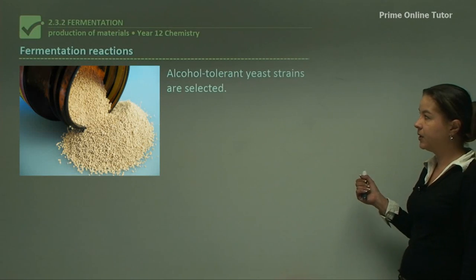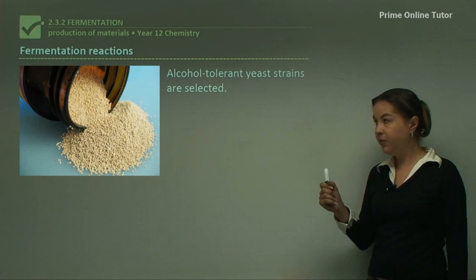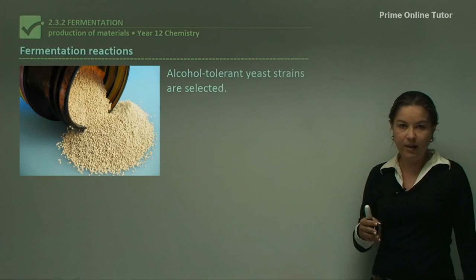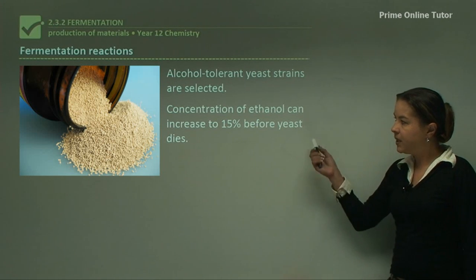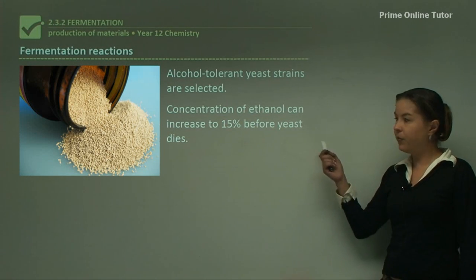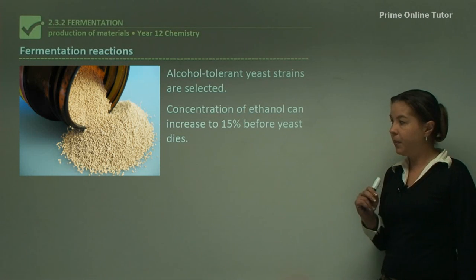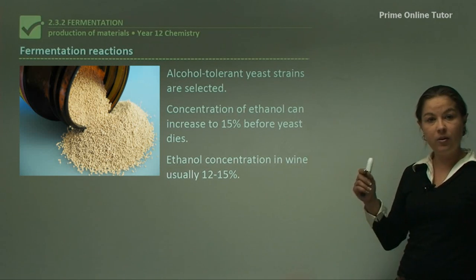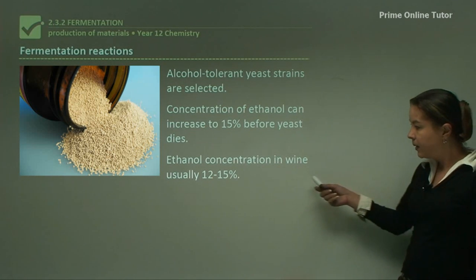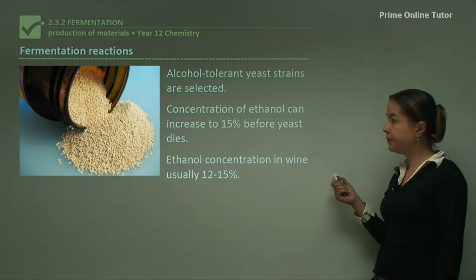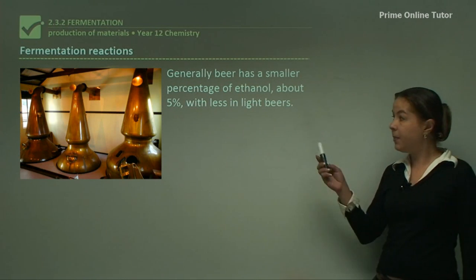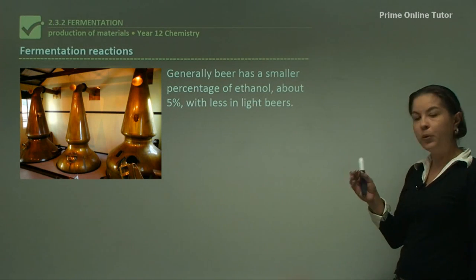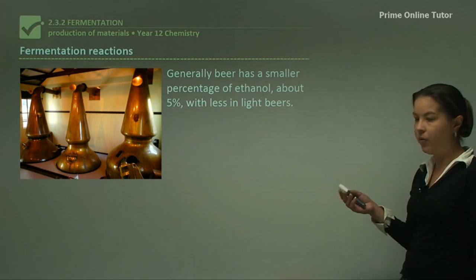Fermentation reactions use alcohol-tolerant yeast, because if you use a yeast that wasn't tolerant to alcohol, once the alcohol starts being produced, it will die and the reaction will stop. The concentration of ethanol can increase to about 15% before the yeast starts dying. In wine, ethanol content is about 12 to 15%, and beer generally has about 5%, with less in light beers. The ethanol content can change depending on the brewer and the hops and barley being used.